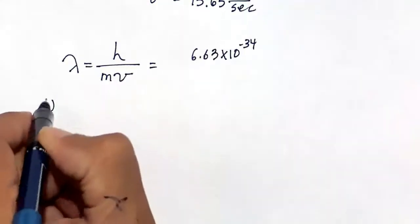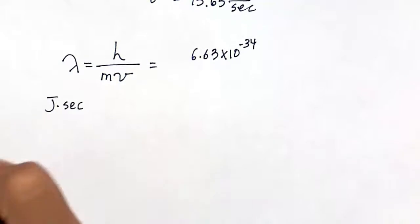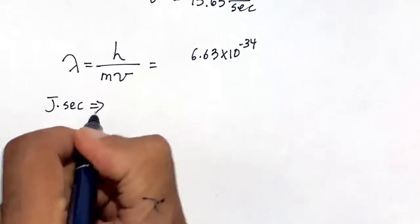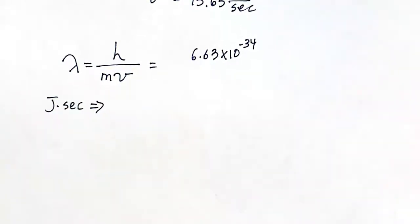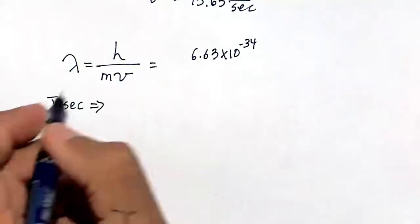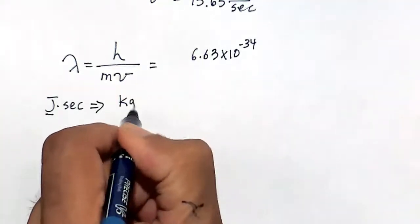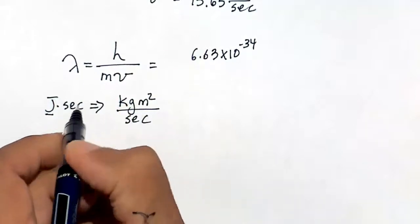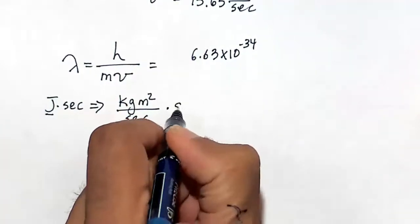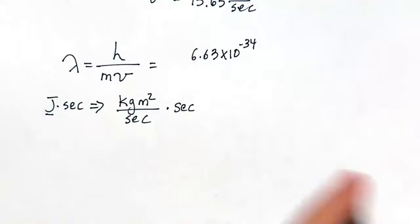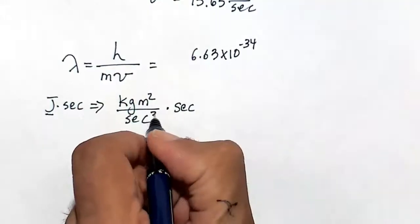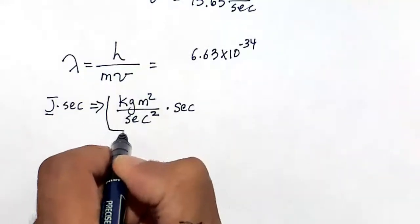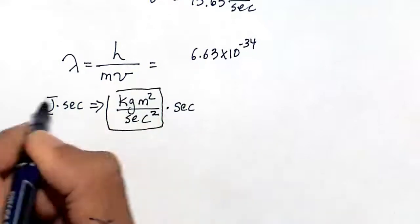I'm going to use the derived SI version of joules. A joule is actually a kilogram meter squared per second squared times this second. It's kilograms meter squared per second squared. That is what a joule equals. Let me box these two.